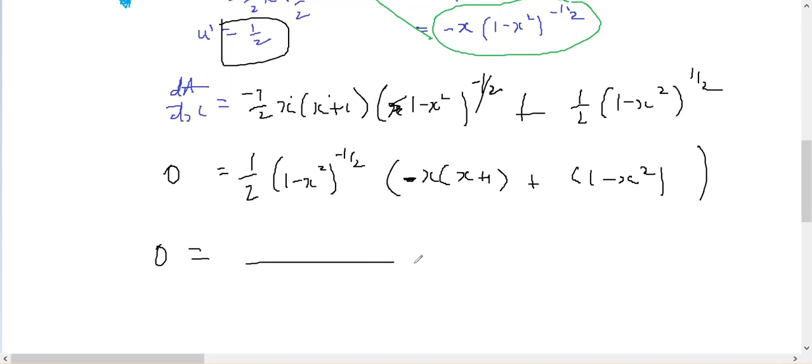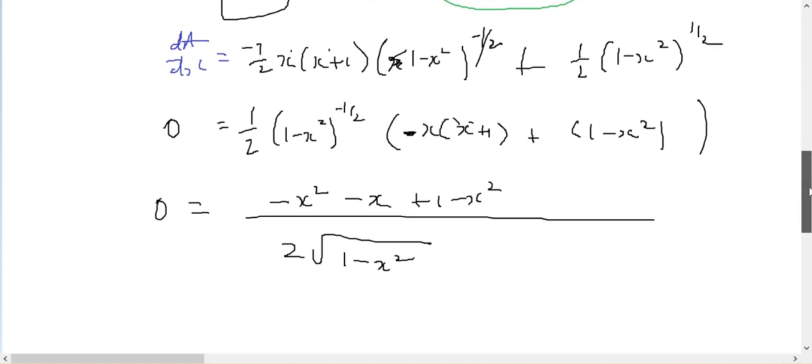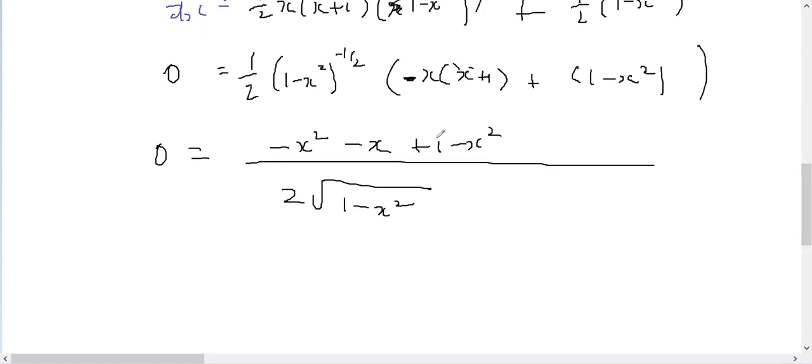So 0 equals, multiply this out, minus x squared, minus x plus 1 minus x squared, all on top of 2, square root of 1 minus x squared. I can only get a 0 from the numerator. Therefore, minus 2x squared minus x plus 1 equals 0.